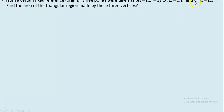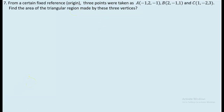Proceeding to the next question, we are given three vertices of a triangle: A(-1, 2, -1), B(2, -1, 1), and C(1, -2, 3). The question is to find the area of the triangular region made by these three vertices. We need to recall the concept of cross products between vectors and their norms when computing the area of a triangle.